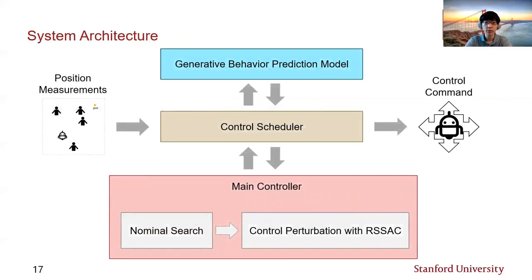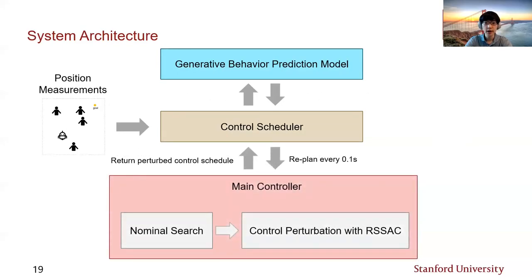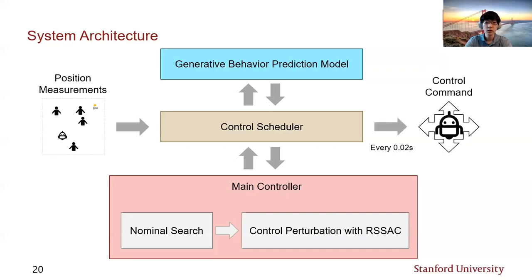The overall system architecture in our implementation is illustrated here. We need a separate generative behavior prediction model that is deep learned. This part is detailed later. The system works as follows. First, the control scheduler queries the prediction model as the new position measurements come in. At the same time, the scheduler asks the main controller to re-plan at a certain frequency. The controller first performs nominal search, which is a simple search algorithm with motion primitives. This allows the robot to consider the effect of various control candidates on the resulting interaction. Once the search is done, the best nominal control schedule is perturbed by risk-sensitive SAC and stored in the scheduler's queue. Finally, the scheduler ensures that the control command is sent to the robot at a high frequency.